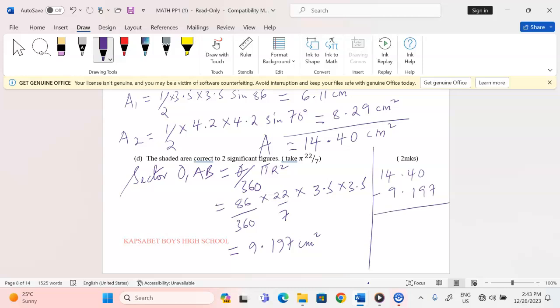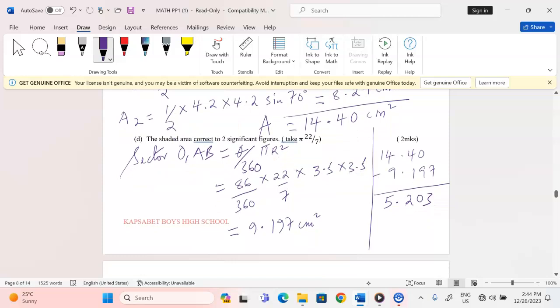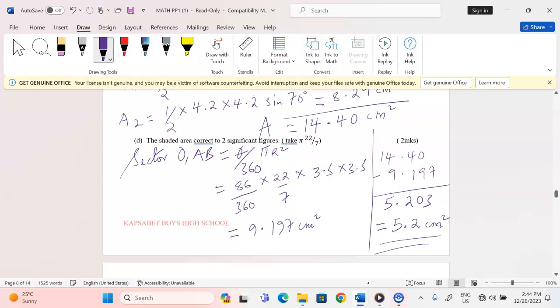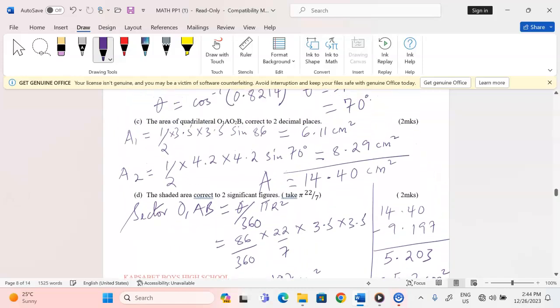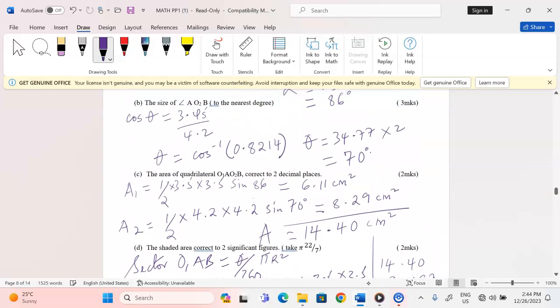Therefore I can take 14.4 and subtract 9.197. This is going to give me 5.203. Remember we have to find area to two significant figures, so two significant figures are going to have 5.2 square centimeters. This is going to be the area of the shaded region. Thank you.